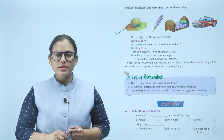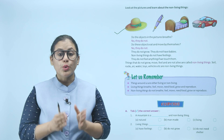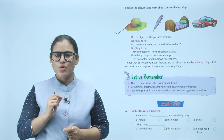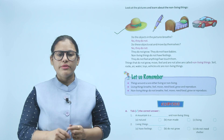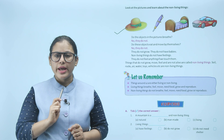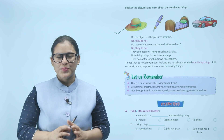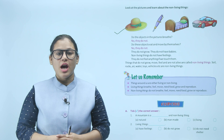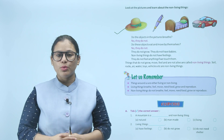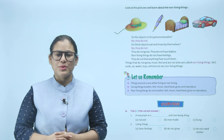Let us remember: things around us are either living or non-living. Living things breathe, feel, move, need food, grow, and reproduce. Non-living things do not breathe, feel, move, need food, grow, or reproduce. Humaare aaspaas ki cheezein ya toh living hain ya phir non-living hain. Children, I hope aapko chapter samaj aaya hoga — living aur non-living things ka difference pata chal gaya hoga. Ab exercise ki practice khud se karein.